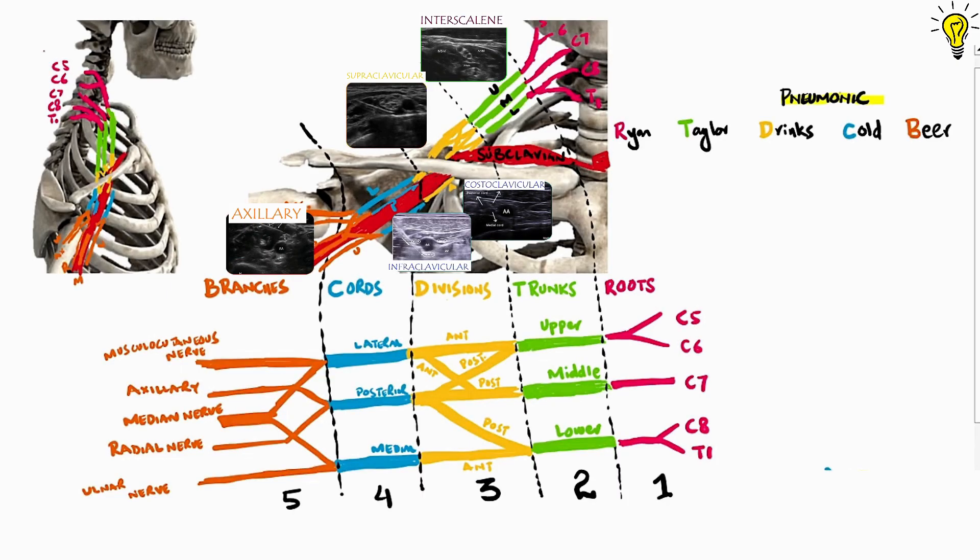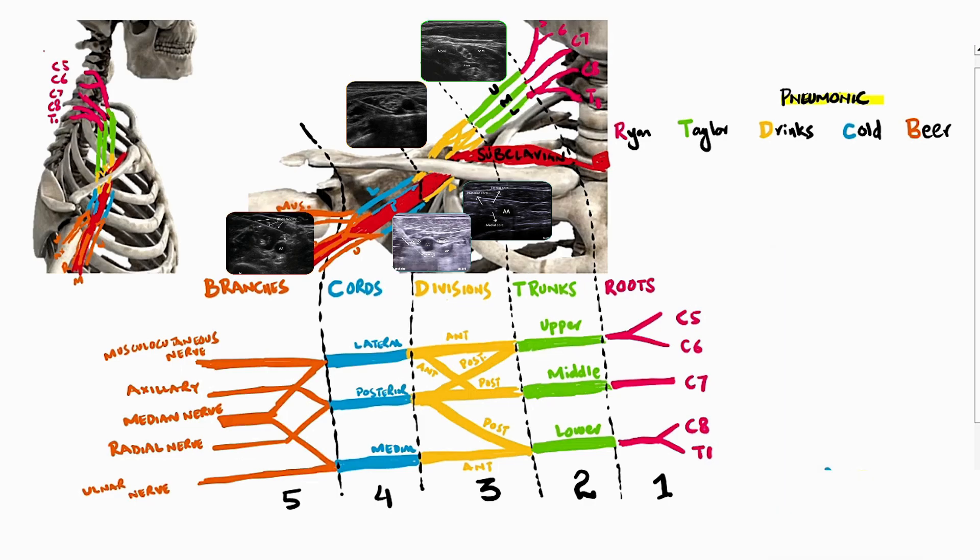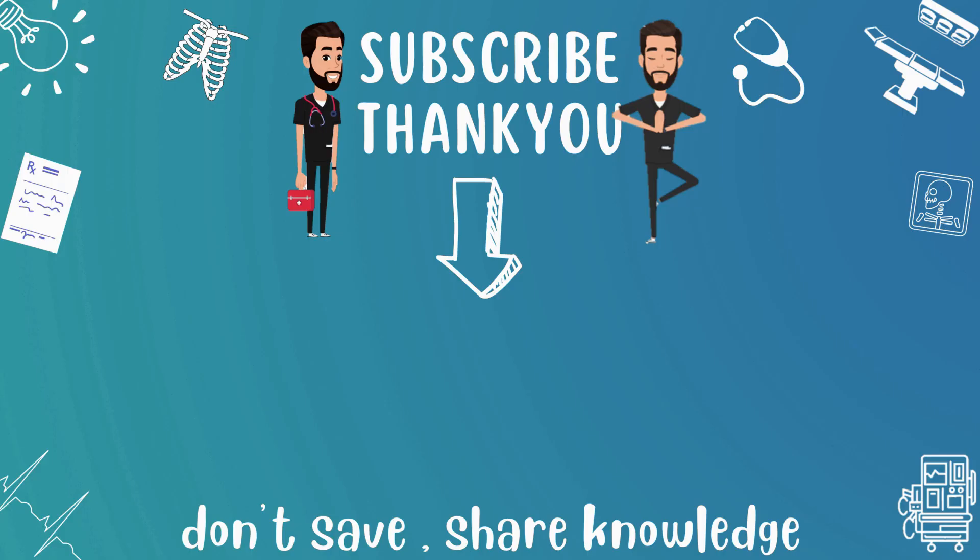So this is all about brachial plexus and its five zones. I am pretty sure if you have seen the video with focus, it won't be hard memorizing brachial plexus again. Next up, in regional anesthesia, we move towards understanding specific brachial plexus blocks separately. But before that, the dermatomes are up next. So stay tuned.